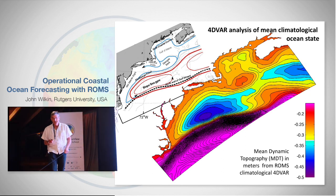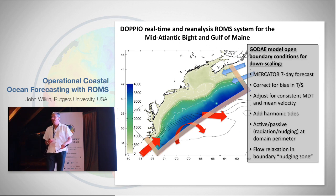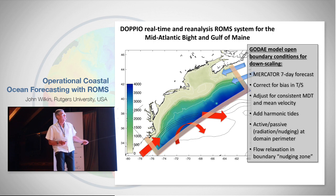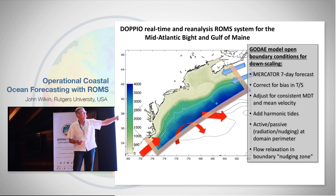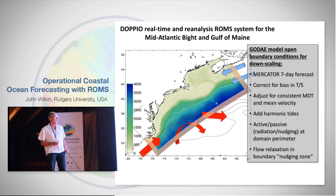The key points are that there is recirculation around George's Bank that's actually driven by tidal residual forces, and a very strong coastal current that's coherent from the Scotian shelf through the Gulf of Maine all the way down through the mid-Atlantic Bight to Cape Hatteras, where it separates and joins the Gulf Stream.